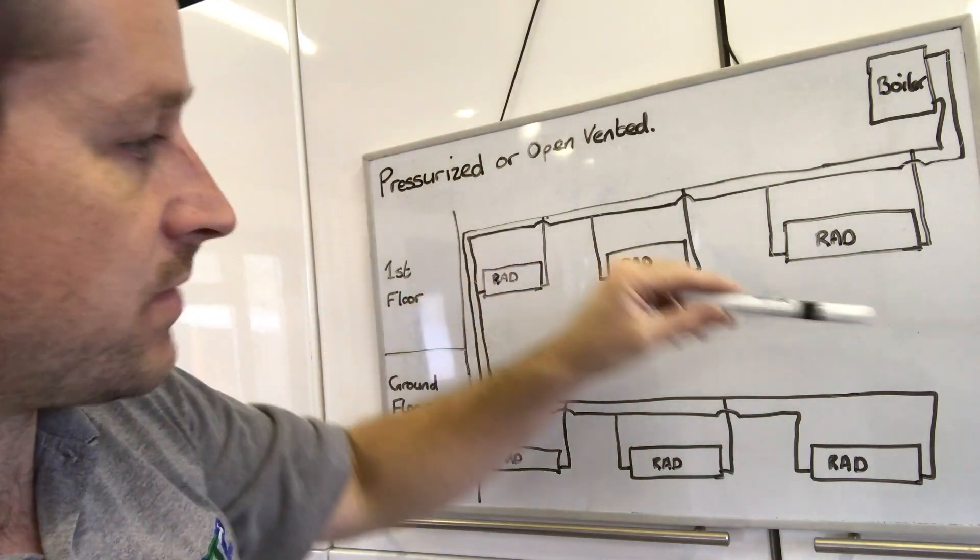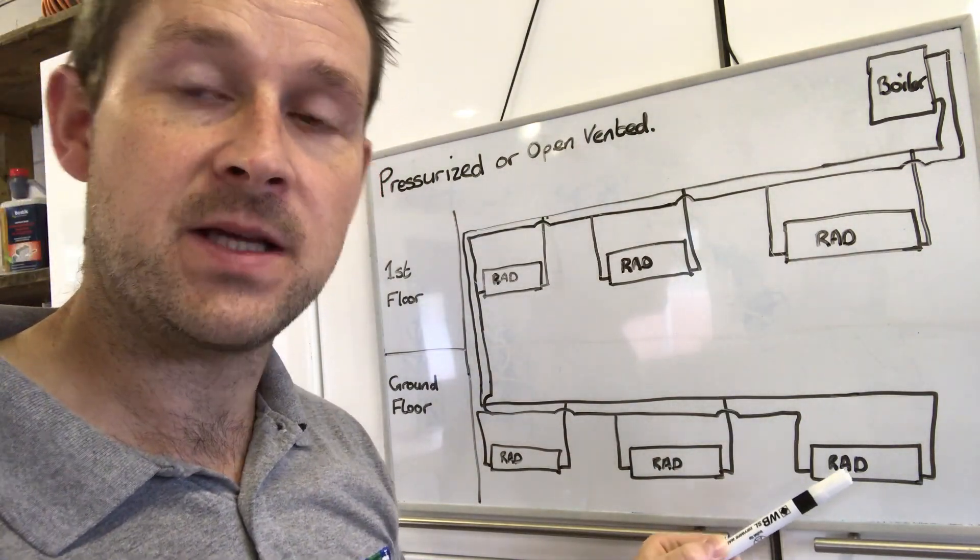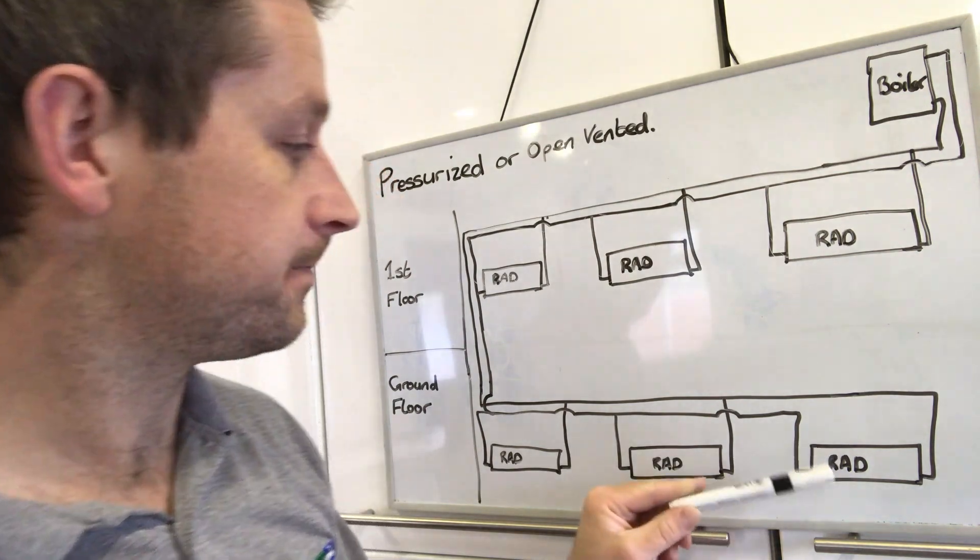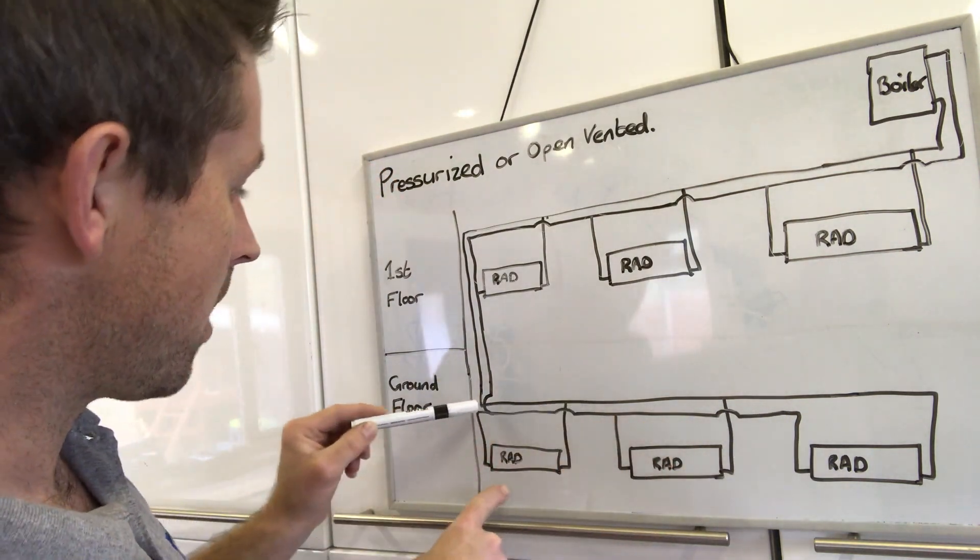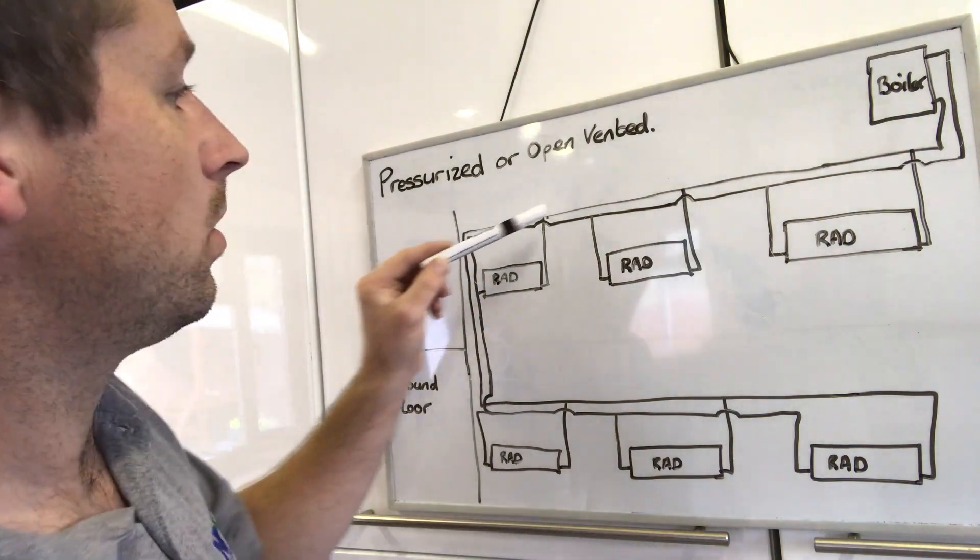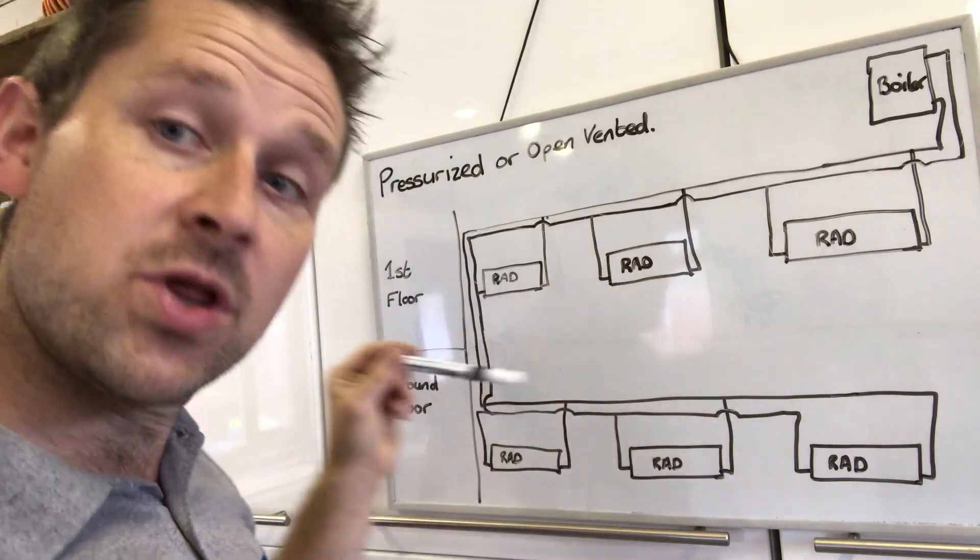It goes around each radiator, gets to the last radiator on the circuit, and when it comes back to the boiler it's then classed as the return pipe work. Each radiator goes into this return pipe work all the way until you go back to your boiler.